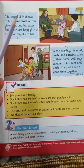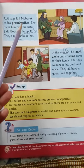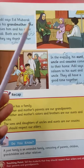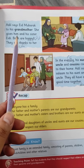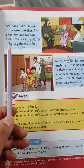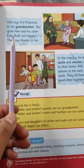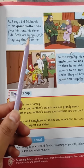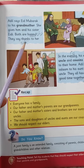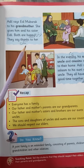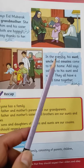Aadil says Eid Mubarak to his grandmother — عادل نے اپنی دادی کو عید مبارک کہا. She gives him and his sister Eidi — انہوں نے عادل اور اس کی بہن کو عیدی دی. Both are happy — دونوں کافی خوش تھے. They say thanks to her — اور انہوں نے اپنی دادی کا شکریہ ادا کیا.